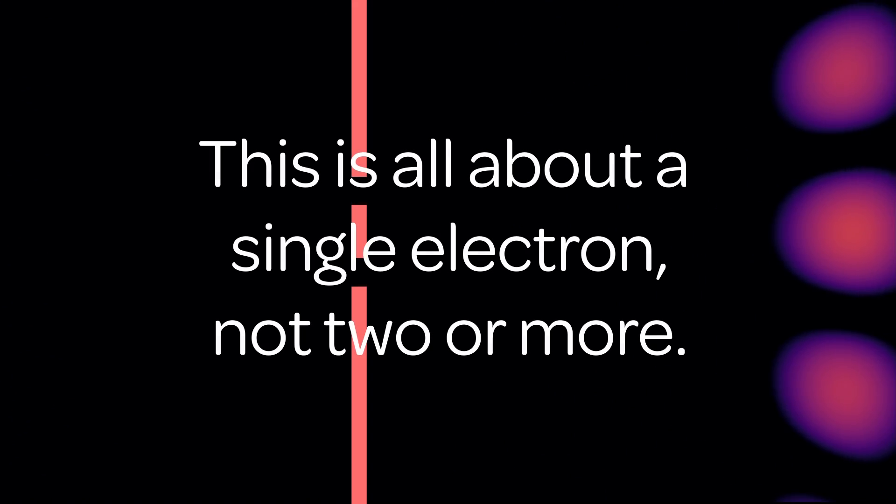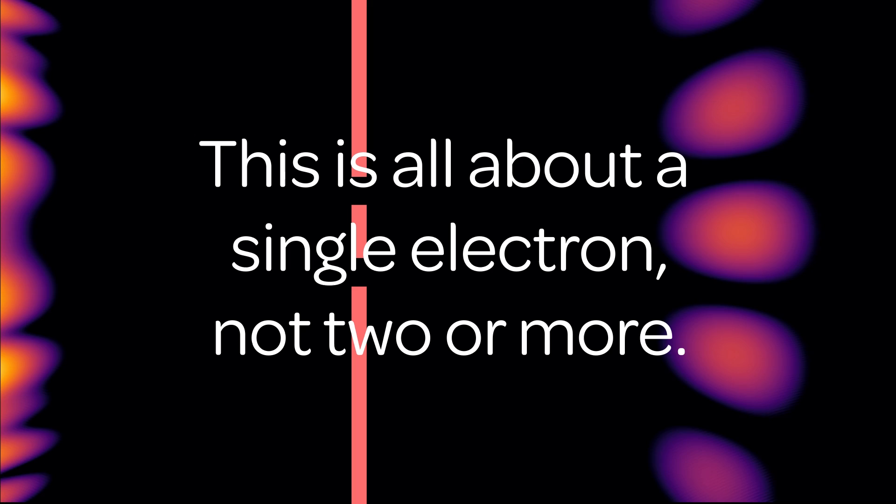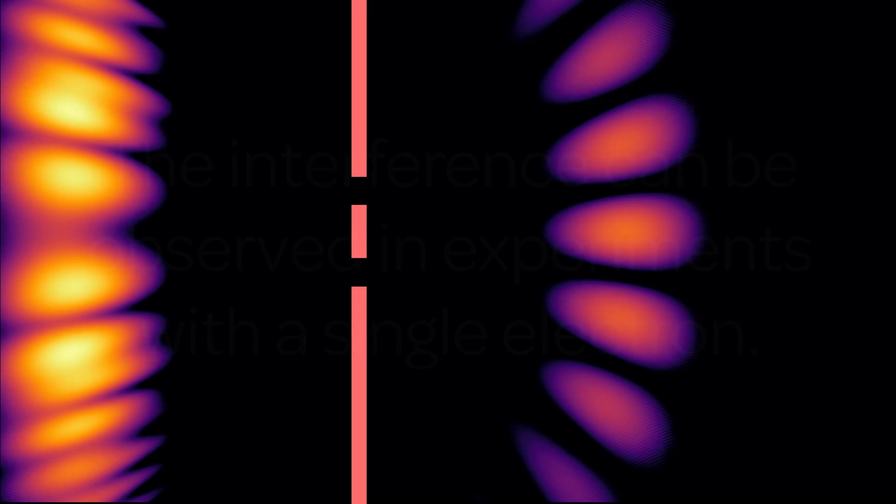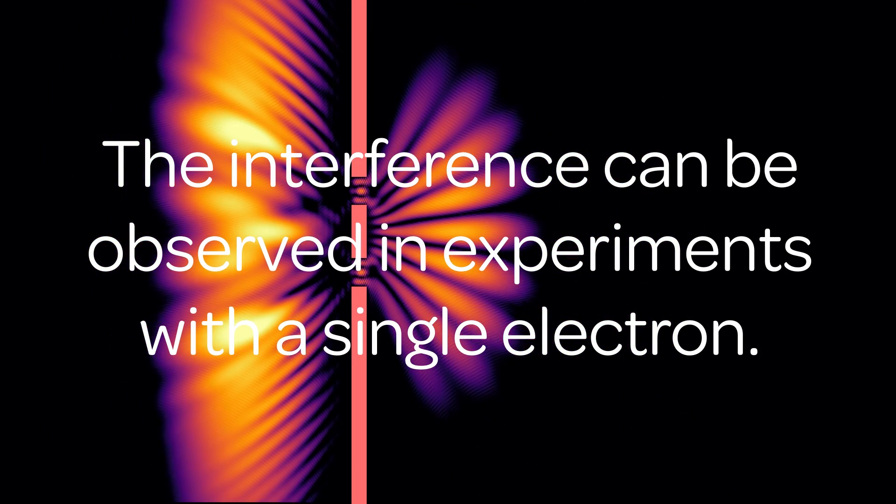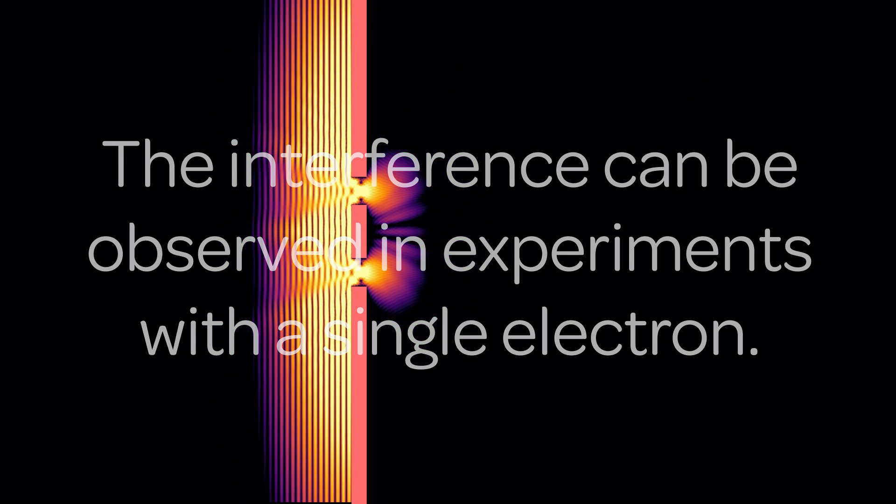Let me remind you that this is all about only a single electron. The interference pattern can be observed in experiments even when we count the electron one by one. The interference is nothing but a superposition of waves.